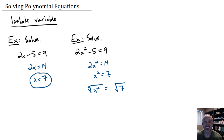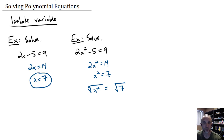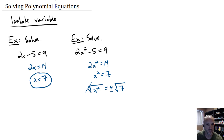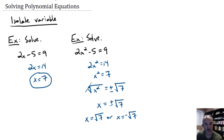The tricky thing — and you should probably write this down — is that when you take an even root of both sides, 7 actually has two square roots: the positive square root and the negative square root. So you have to include a plus or minus. The square root cancels the square power, leaving x, and on the right side we have plus or minus the square root of 7. So x could be the positive square root of 7, or it could be the negative square root of 7.